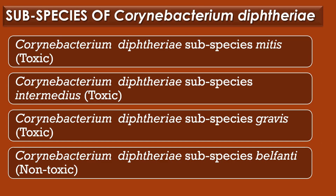Subspecies of Corynebacterium diphtheriae. Four subspecies are recognized: Corynebacterium diphtheriae subspecies mitis, intermedius, gravis, and belfanti. Among the four subspecies, the first three — mitis, intermedius, and gravis — are toxic, while belfanti is non-toxic in nature. The four subspecies differ slightly in colony morphology and biochemical properties such as ability to metabolize certain nutrients.